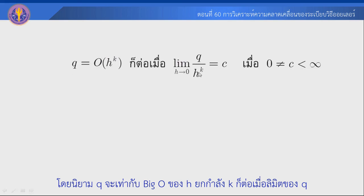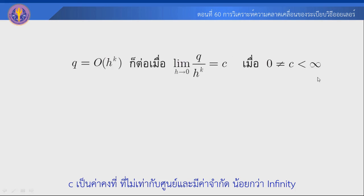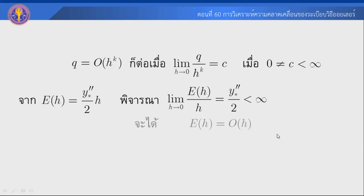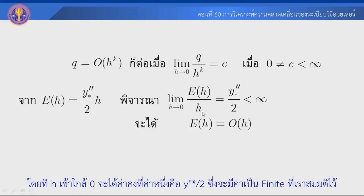...if the limit as h approaches 0 of Q divided by h remains bounded (C could be finite and not infinity). So Q is of Big O(h). On terms of the error e, y is of the order Big O(h) using this definition.